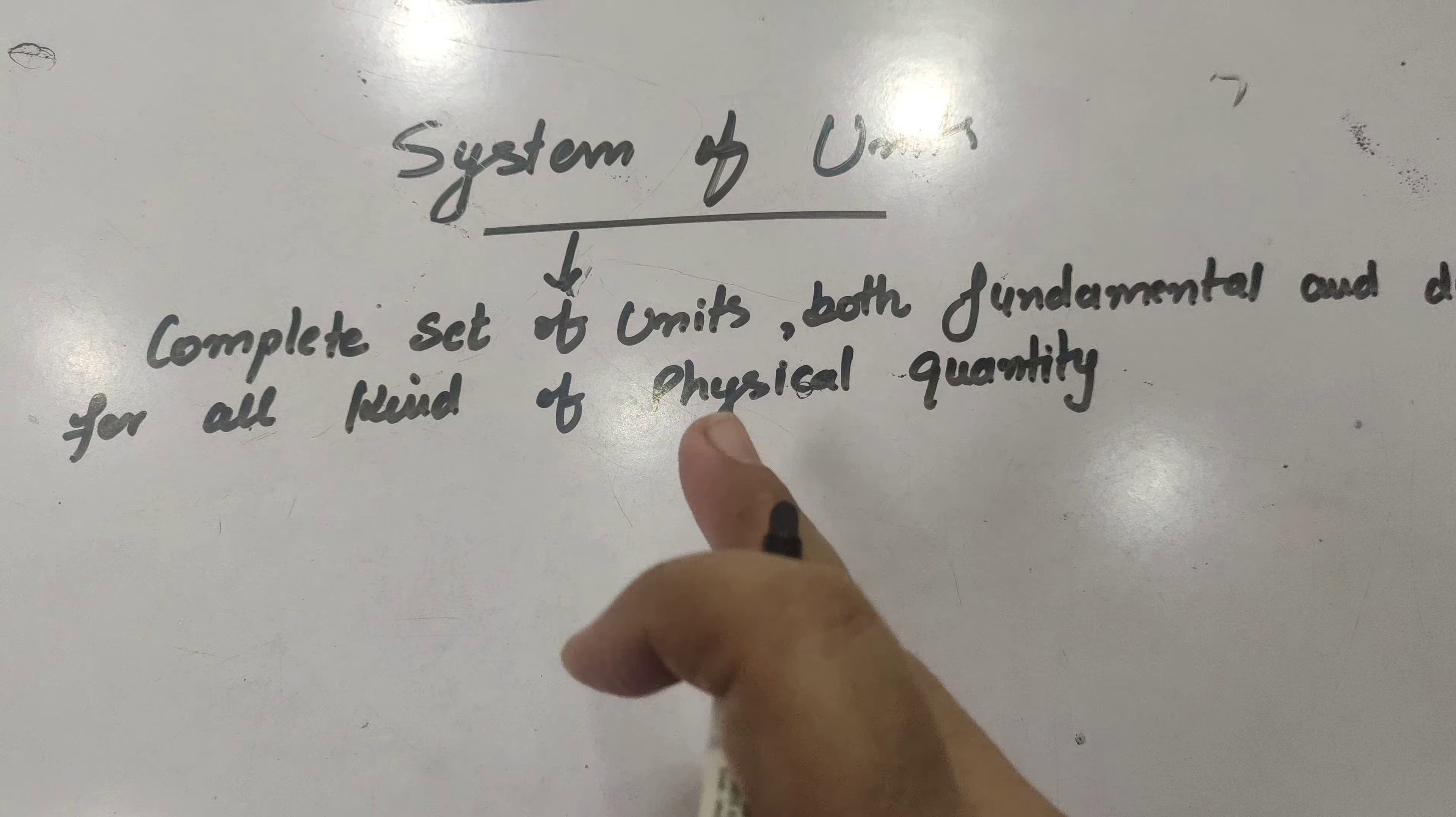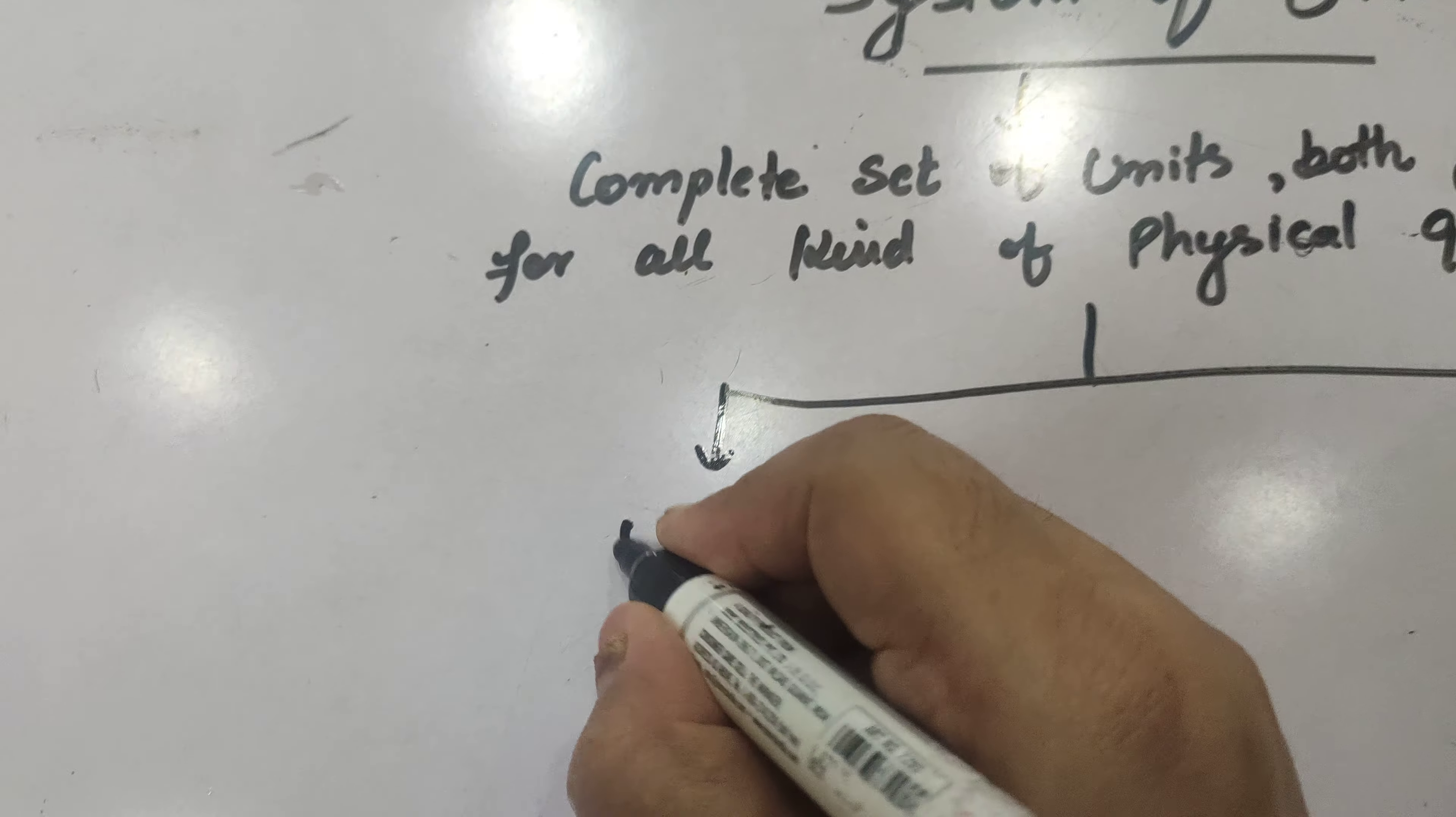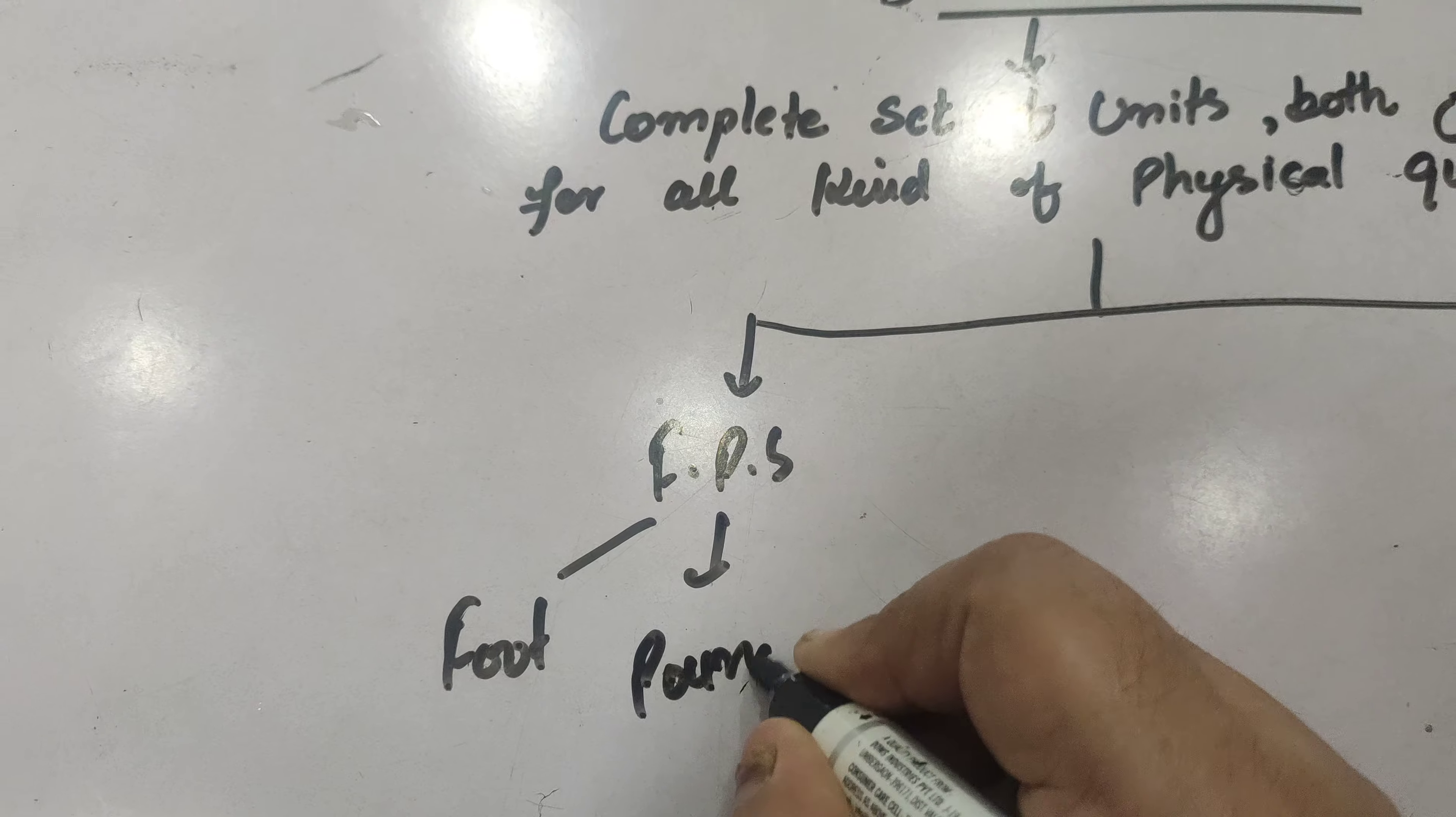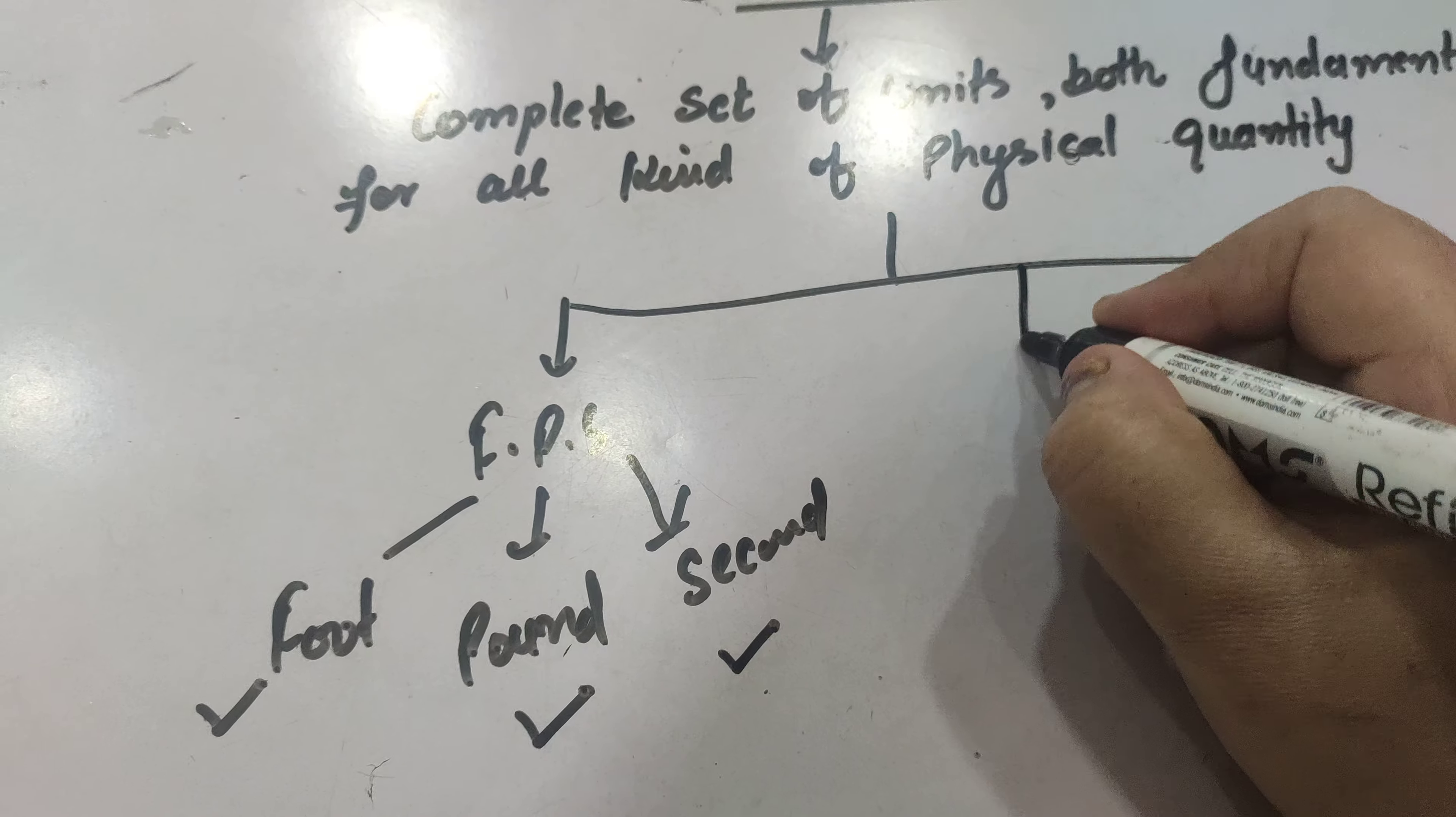Basically there are three types of system of units. First is FPS: F means foot, P for pound, and S for second. For length we are using foot, for mass we are using pound, and for time it is second.